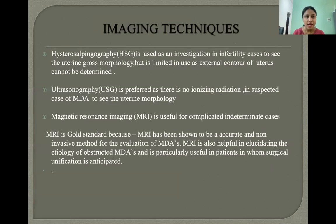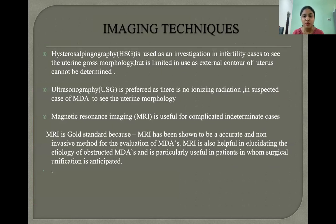Regarding imaging techniques, hysterosalpingography is used as an investigation in infertility cases to assess uterine gross morphology, but is limited as the external contour of the uterus cannot be determined. Ultrasonography is preferred as there is no ionizing radiation in suspected cases of Mullerian duct anomaly. MRI is the gold standard as it is an accurate and non-invasive method for evaluation of Mullerian duct anomalies.